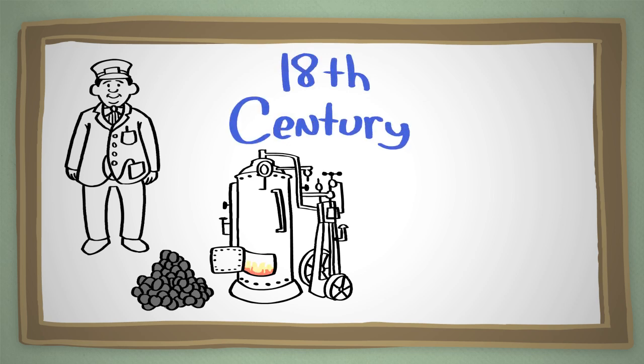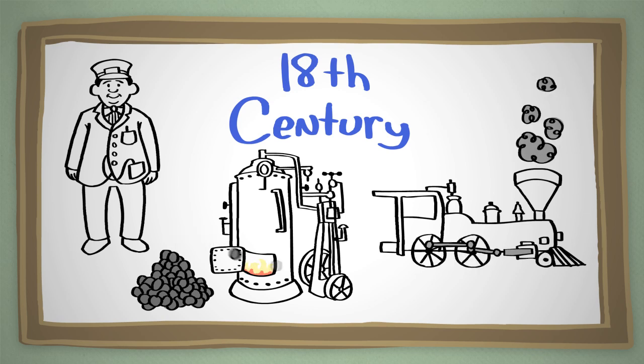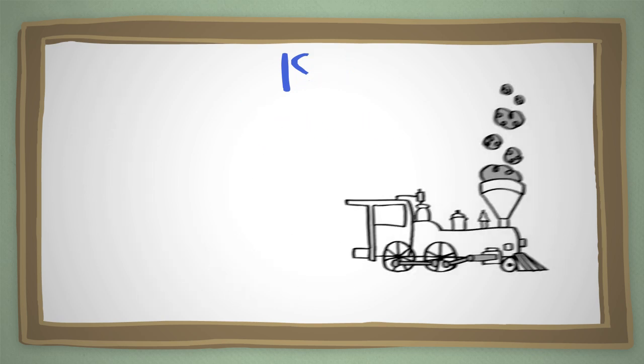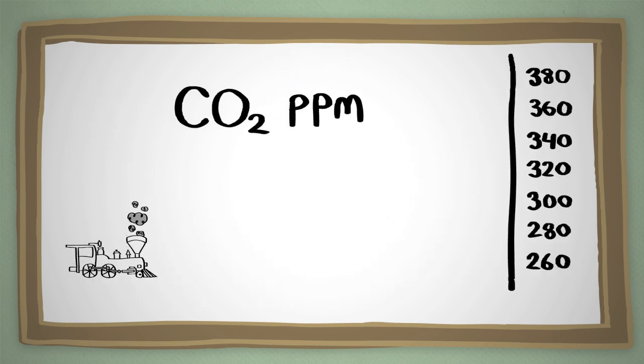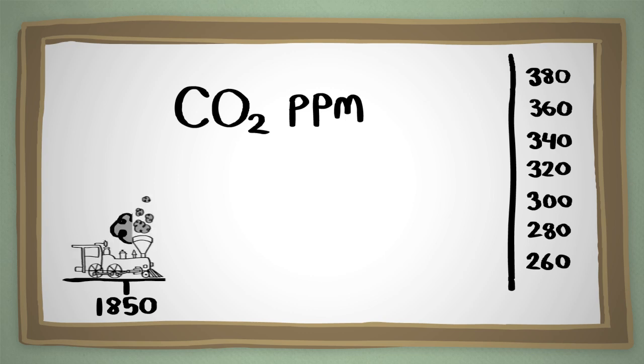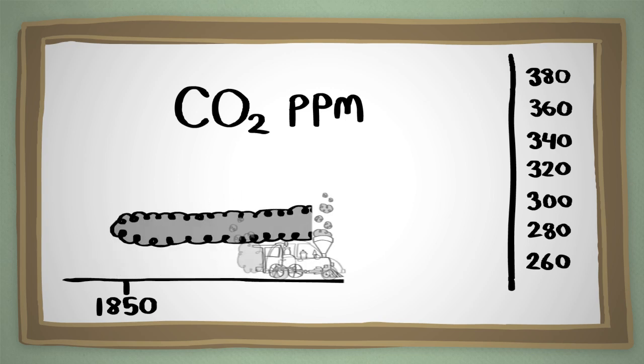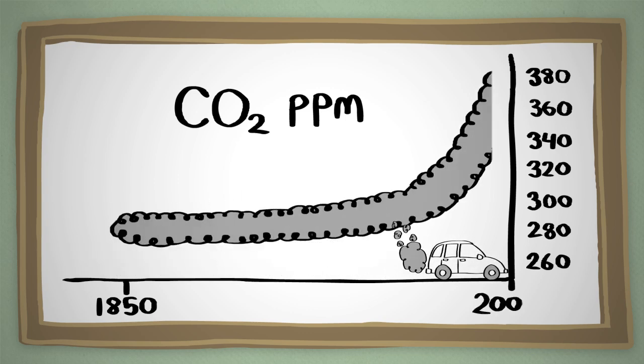Back in the 18th century, people started burning coal to power a new invention: steam engines. But here's something curious. Ever since steam engines were widely used, starting in about 1850, the amount of carbon dioxide in the atmosphere began to climb.